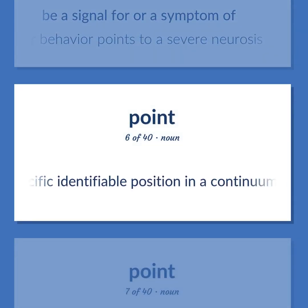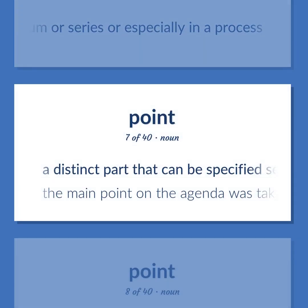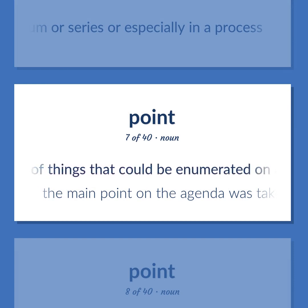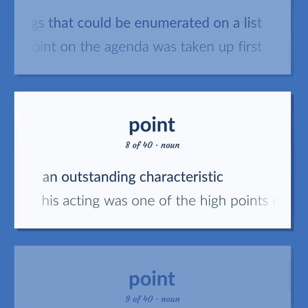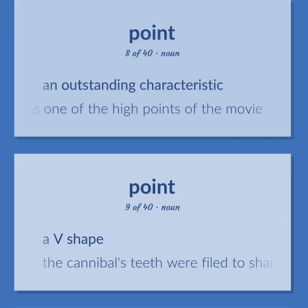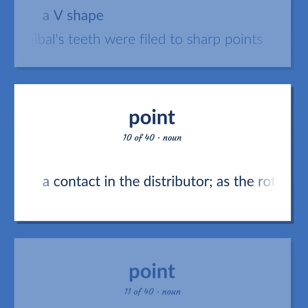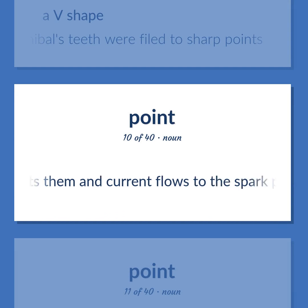A specific identifiable position in a continuum or series or especially in a process. A distinct part that can be specified separately in a group of things that could be enumerated on a list. The main point on the agenda was taken up first. An outstanding characteristic. His acting was one of the high points of the movie. A V shape. The cannibal's teeth were filed to sharp points. A contact in the distributor: as the rotor turns its projecting arm contacts them and current flows to the spark plugs.